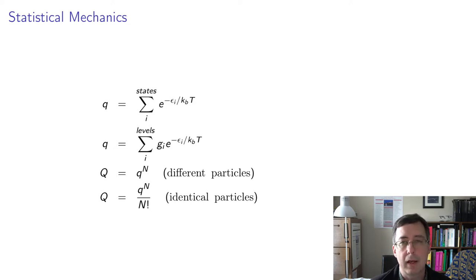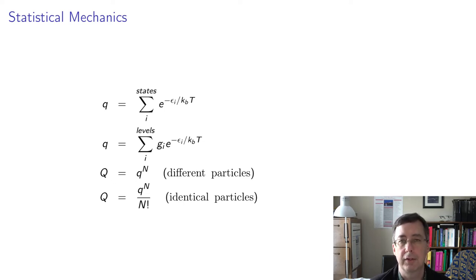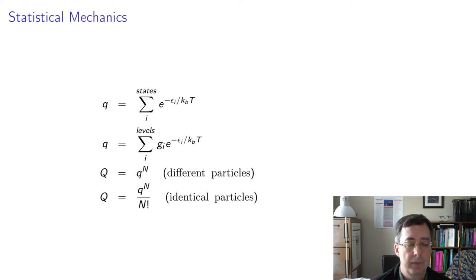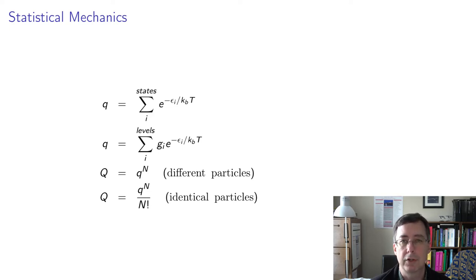If you like, you're free to sum over energy levels instead of energy states, where each level might have a degeneracy. For example, p orbitals are degenerate — px, py, and pz have the same energy. So you could sum over distinct levels and multiply each exponential by a degeneracy factor g_i, telling you how many states have that same energy. It's the same sum.